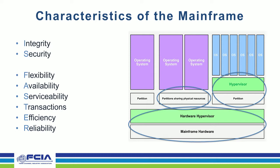Thanks Howard. The acronym is ISFASTER, and performance is key. One of the strengths of the mainframe is the IO subsystem, which allows a massive amount of parallel work to be performed. And obviously the IO subsystem is what we're going to talk about today.